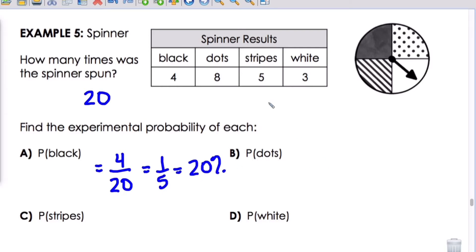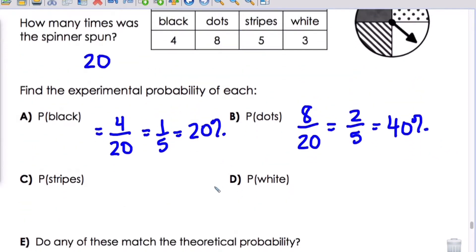Letter B, the probability of dots we can say is eight out of 20, which is two-fifths and 40%. So dots so far is definitely the highest. We can see from that number it should be and our chances are 40% that it would be dots. P of stripes we would have five out of 20 to give us one-fourth which is 25% chance. Letter D, P of white is three out of 20 which is 15%.